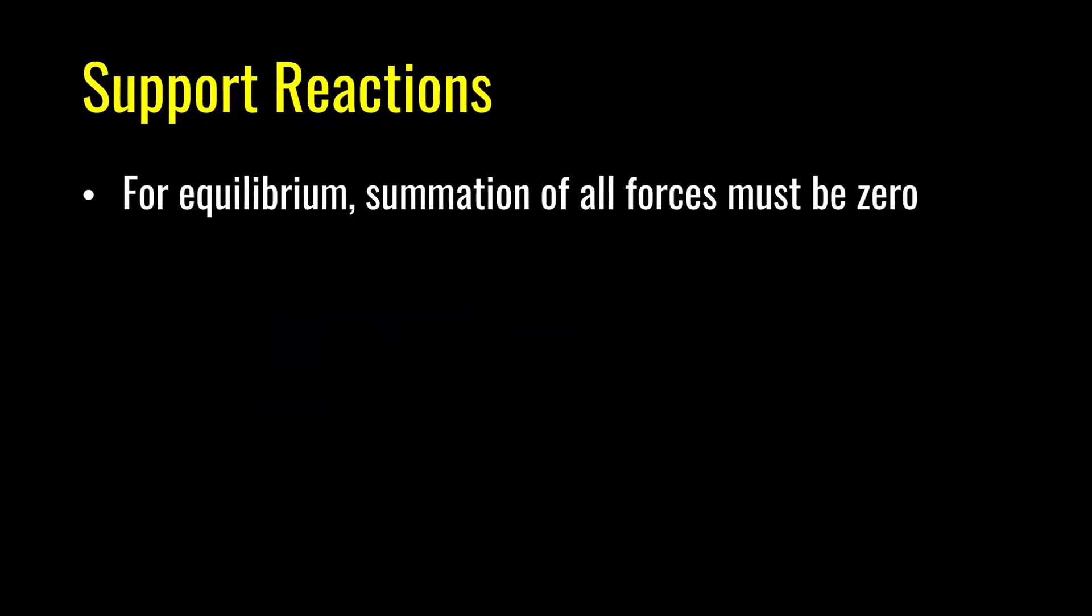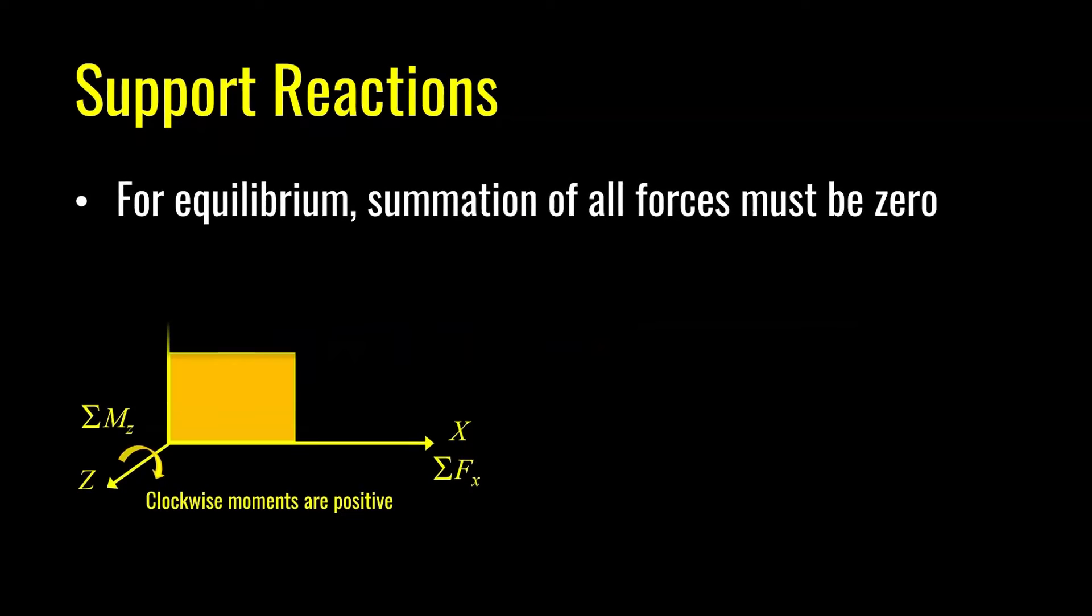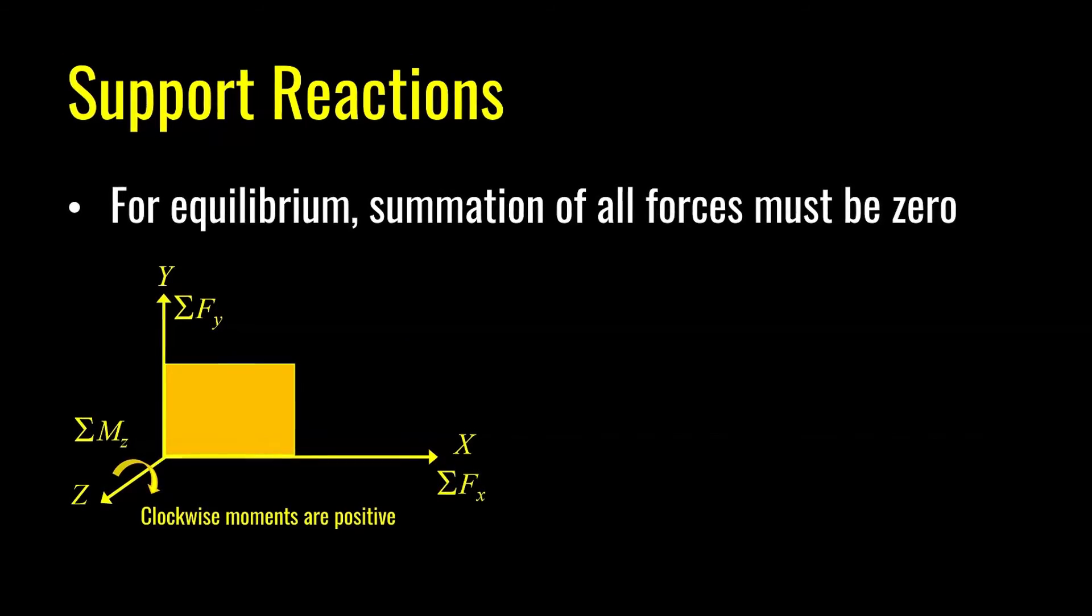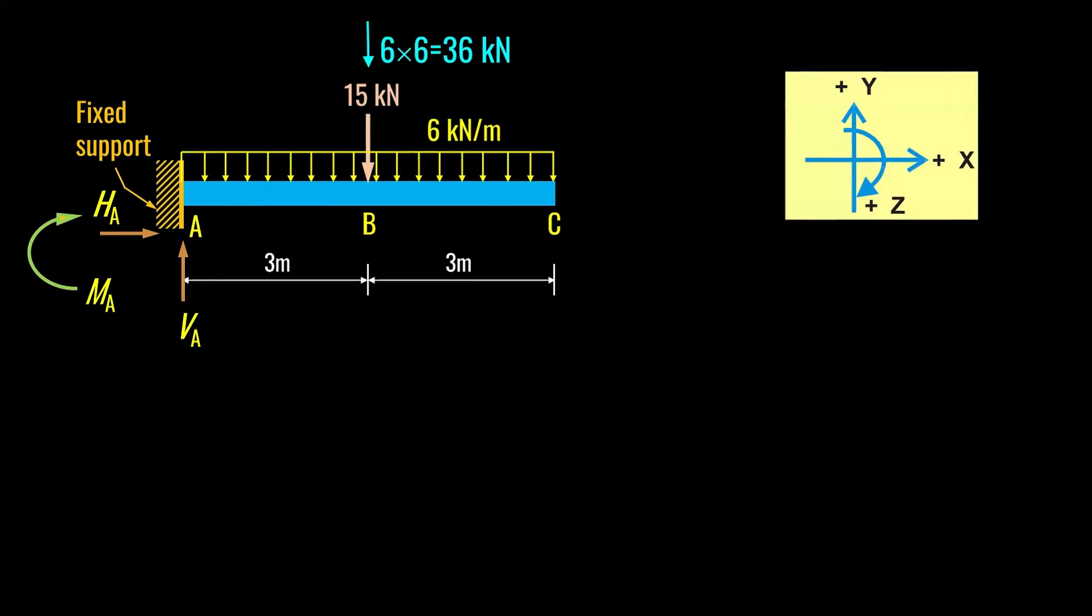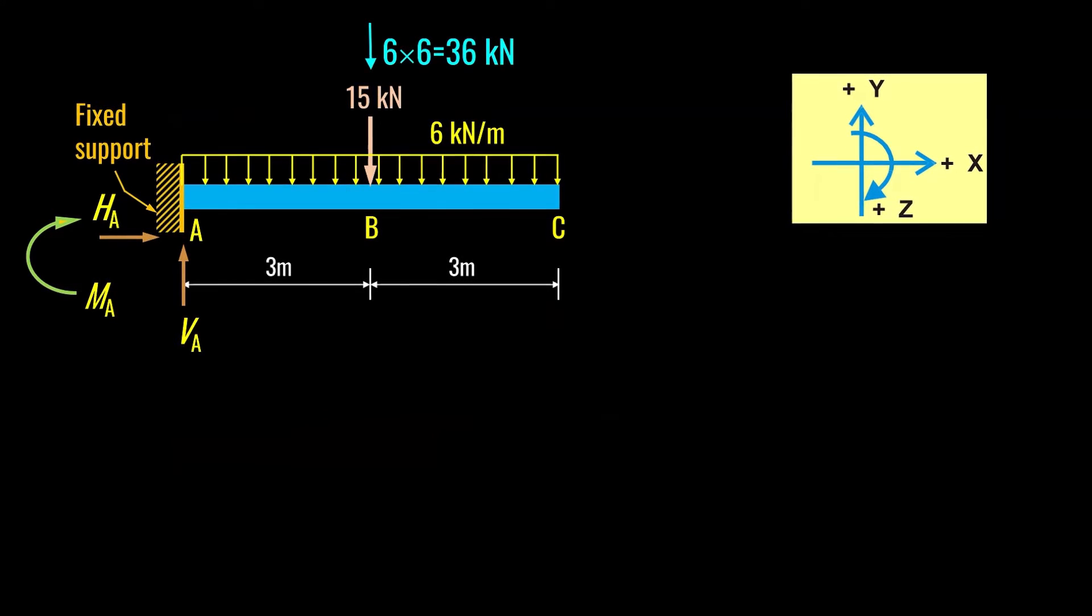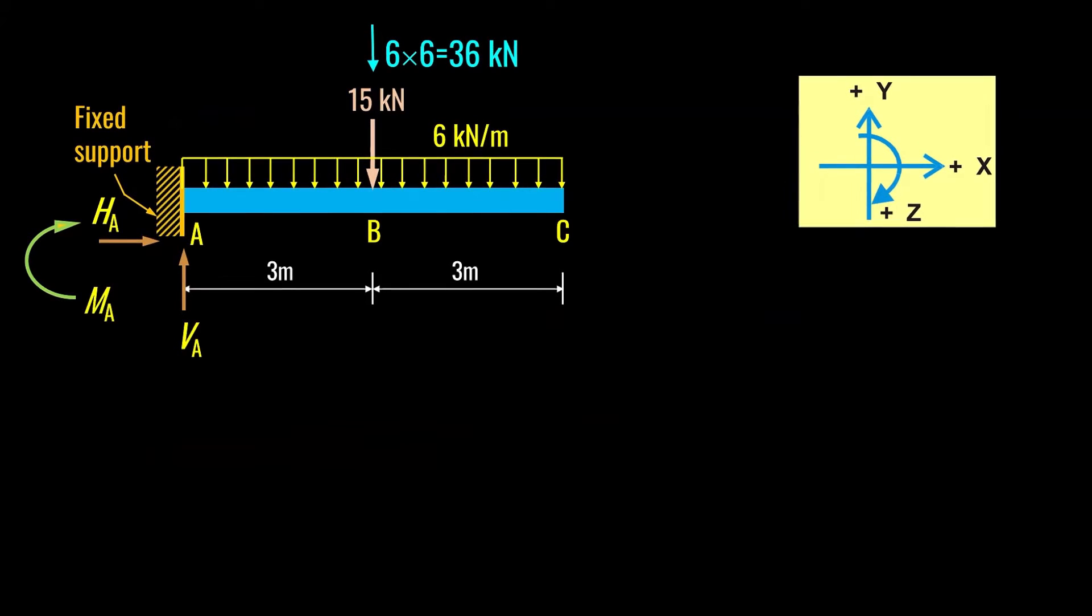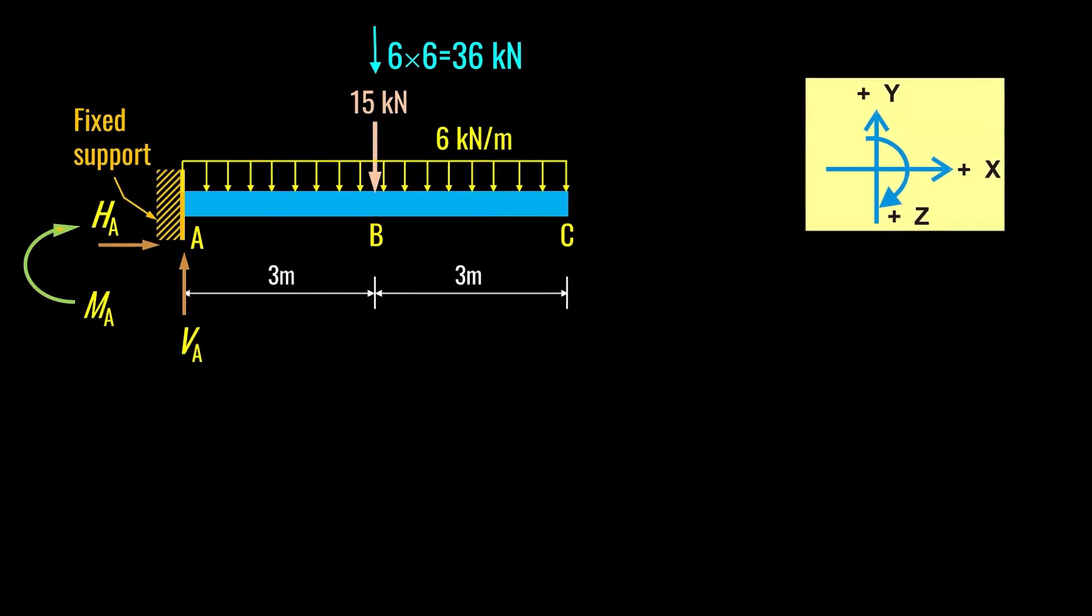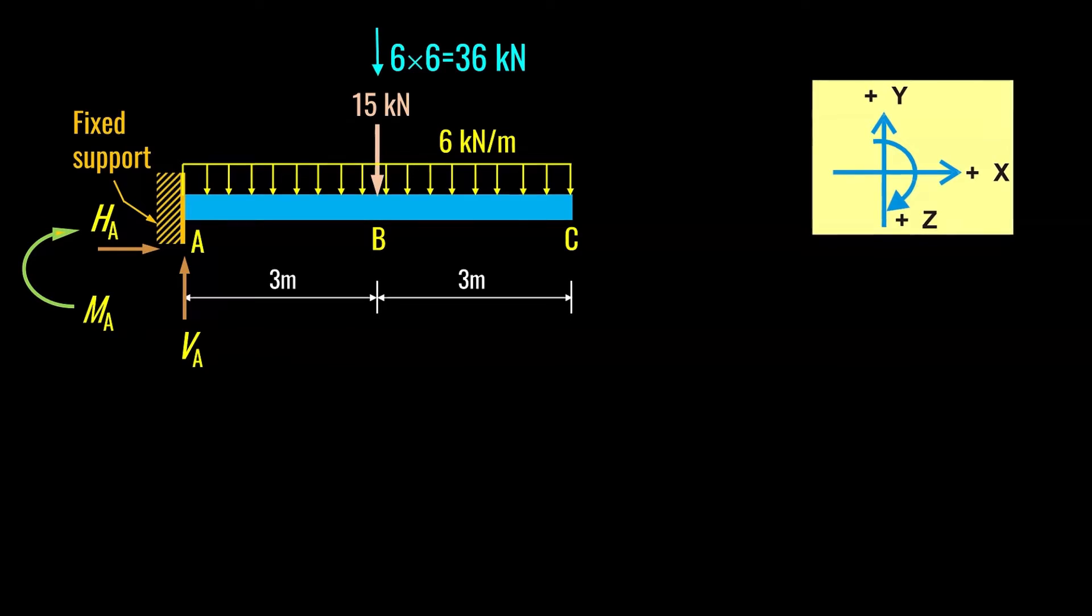For finding reactions, I will use equilibrium equations. There are three equilibrium equations: summation of horizontal forces equal to zero, summation of vertical forces equal to zero, and summation of moment equal to zero. The sign convention which I have used here is upward forces are positive, rightward forces are positive, and clockwise moments are positive when starting from left side. If you are starting from right side, then reverse is true.